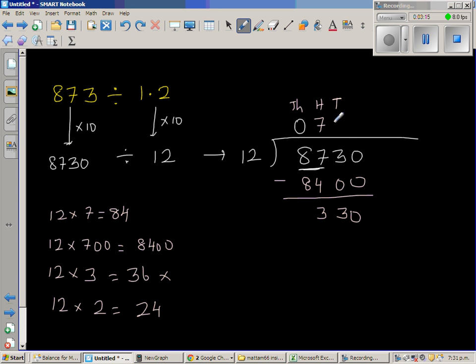So 12 times 2 is 24. So when you're writing 2 in the 10th place, you're multiplying 12 times 20, which is 240. So 12 times 2, 2 is in the 10th place. So 12 times 20 is 240.